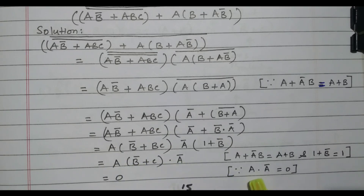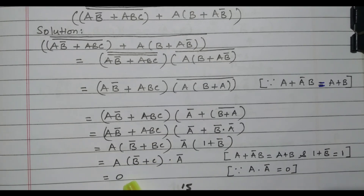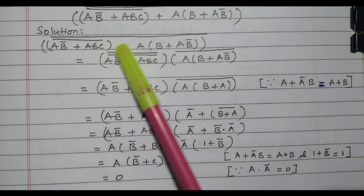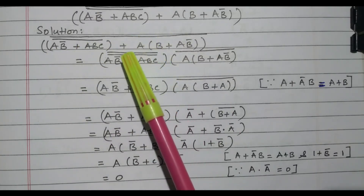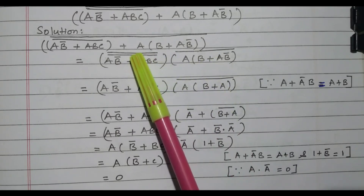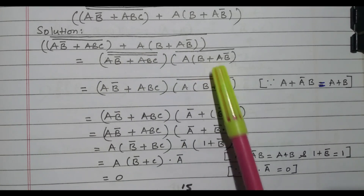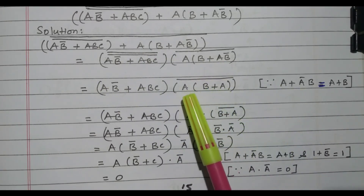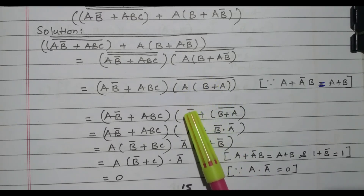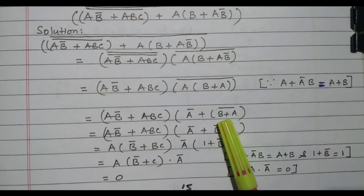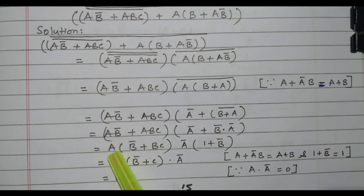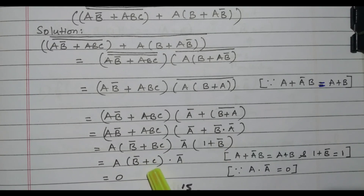Now we have A times A-bar. A times A-bar is always 0, since a number multiplied by its complement gives 0. So finally the expression equals 0. To recap: we applied De Morgan's theorem, removed double complements, simplified using B plus A, applied both De Morgan's theorems again, factored out A and A-bar, used 1 plus B-bar equals 1, and concluded that A times A-bar equals 0.